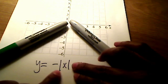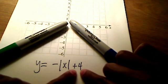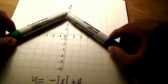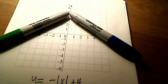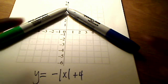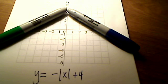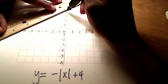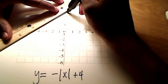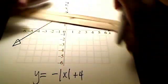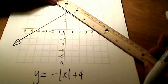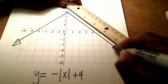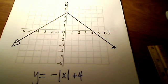That's the negative absolute value of x part. What does the plus 4 do? That's a vertical shift — it shifts the graph up 1, 2, 3, 4 places. So this is what our function looks like, and I'll draw that in. Here's what the left side looks like and here's the right side — our complete graph.